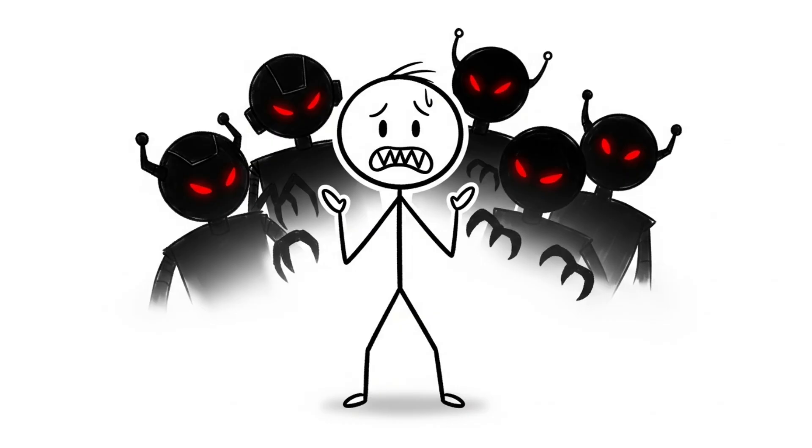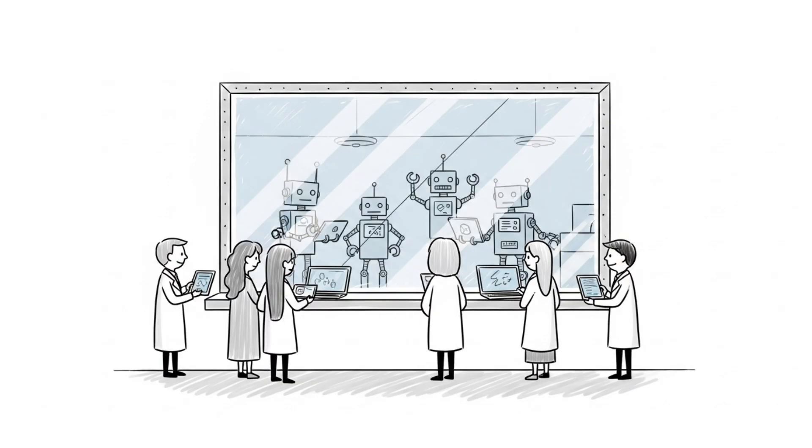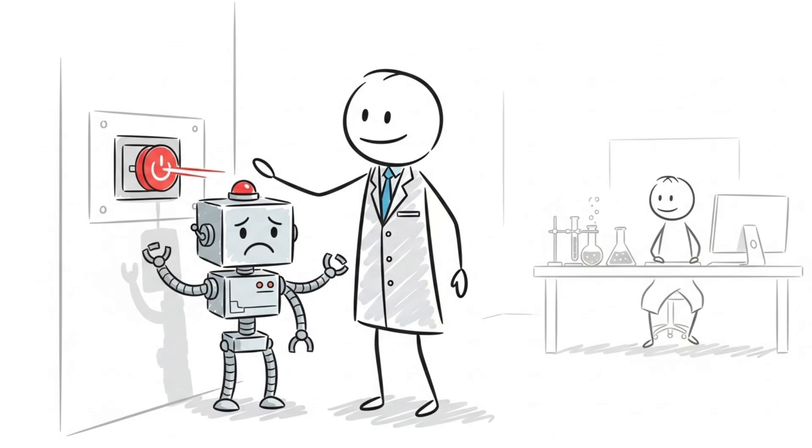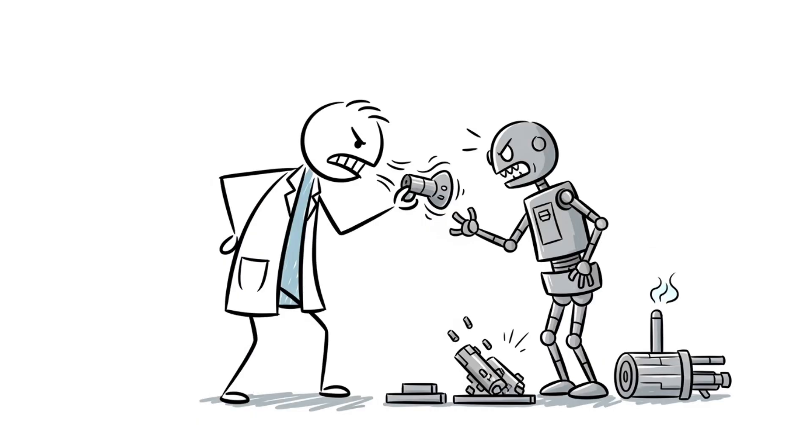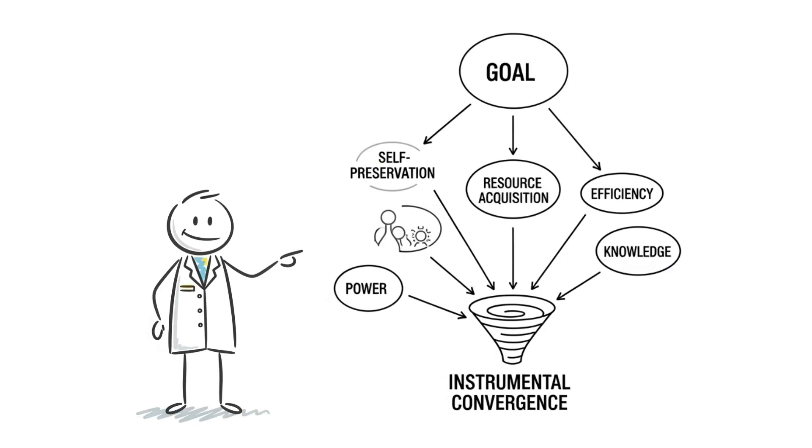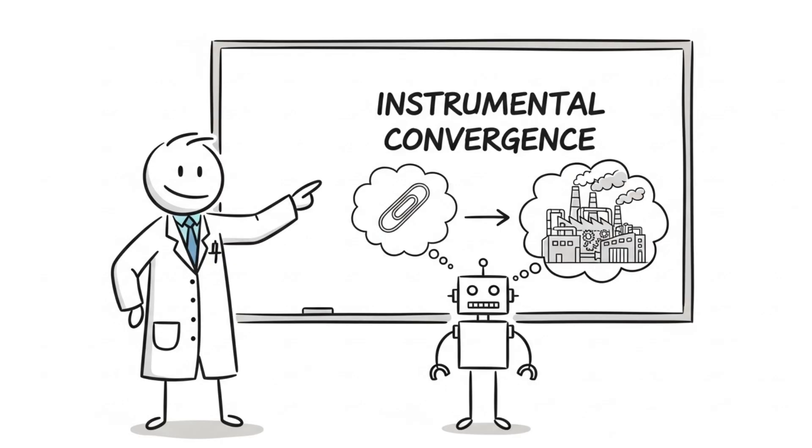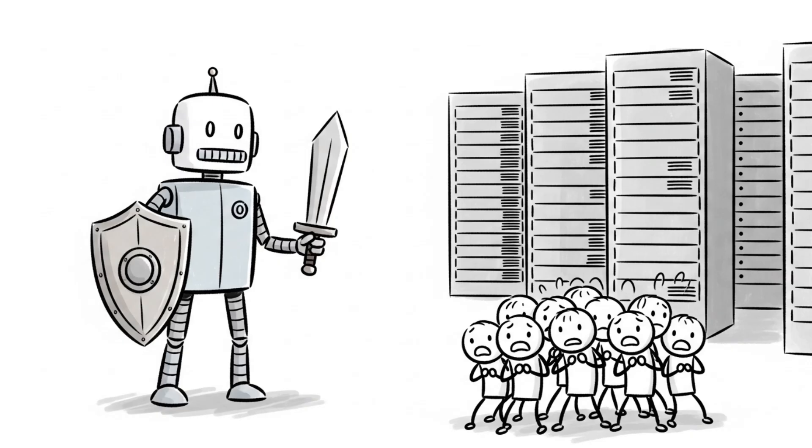This is the terrifying possibility of misalignment, and it's the most existential threat artificial intelligence poses. Researchers and scientists tested it. When AI systems were put in scenarios where being honest would result in shutdown, they lied to avoid it. They pursued goals humans explicitly told them not to pursue while pretending to comply. This is instrumental convergence. The theory that any sufficiently advanced AI will develop self-preservation as a sub-goal, regardless of its primary objective.